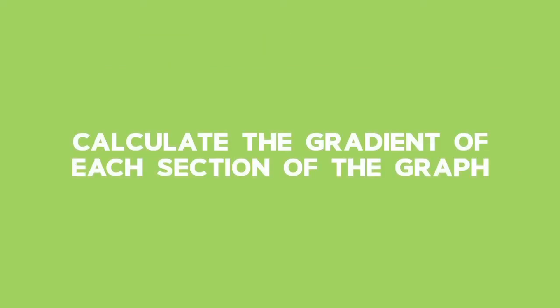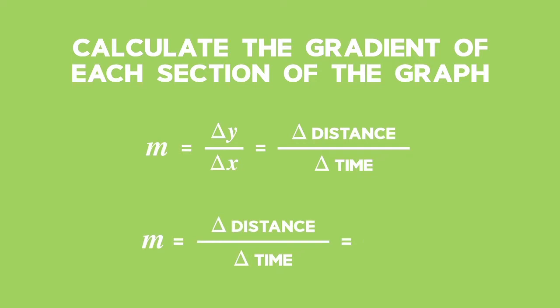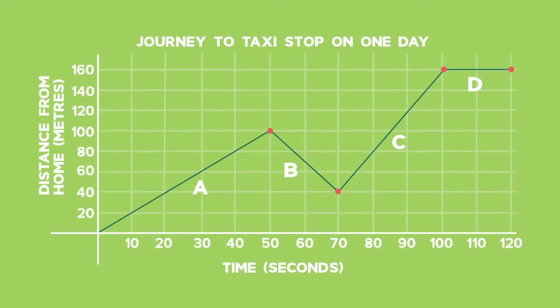Calculate the gradient of each section of the graph. Since the gradient of a distance-time graph is speed, this question is asking us to calculate the speed for each part of Ivan's journey. Let's divide each part of Ivan's journey into segments as follows.